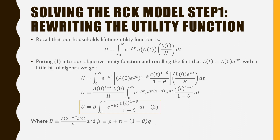Now let's go into the lifetime utility function. Recall that our household's lifetime utility function is defined as follows. Plugging equation 1 into our objective utility function, and recalling that L(t) = L(0) · e^(nt), with a little bit of algebra we get equation 2: U = B · ∫ e^(−bt) · c̃_t^(1−θ) / (1−θ) dt, where B = A(0)^(1−θ) · L(0) / H, and b = ρ + n − (1−θ)g.